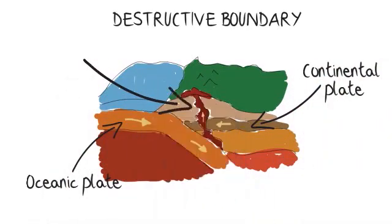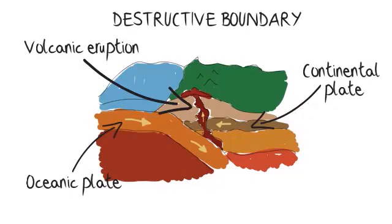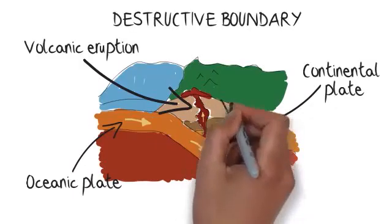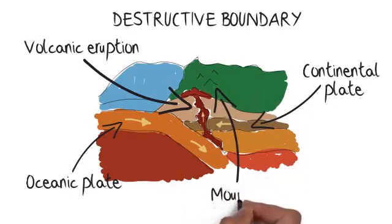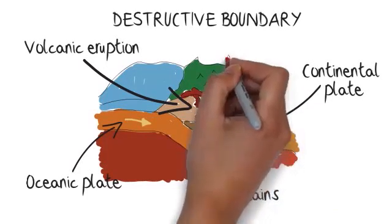This creates shuddering earthquakes and can even trigger a volcanic eruption if the magma is under enough pressure. The force of this collision is so great that whole mountains are crushed together, which is known as folding. This pushes the mountains upwards.